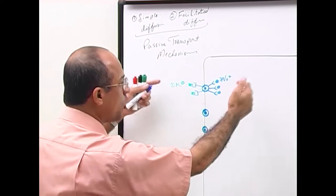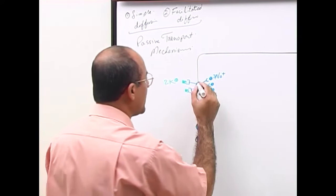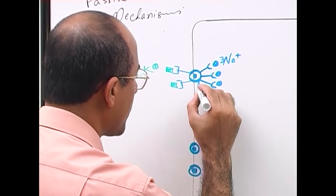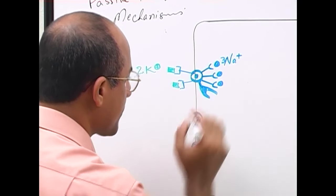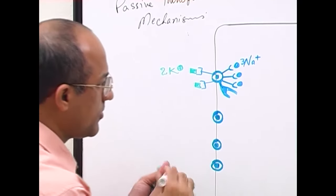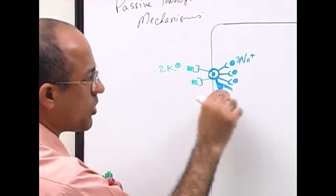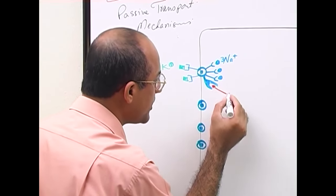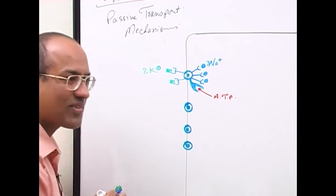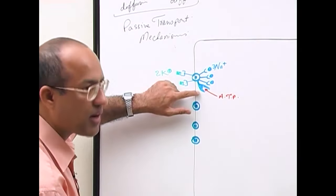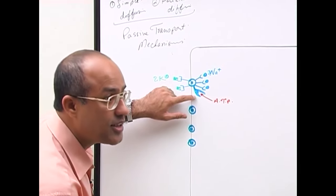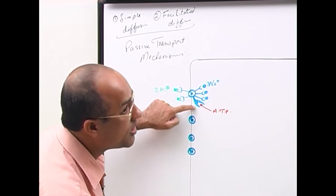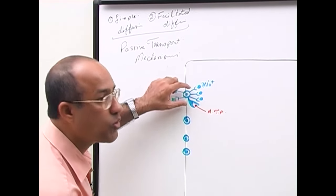When this molecule is loaded with sodium, it opens a special pocket. Once loaded on both sides, an ATP molecule fits into this special pocket. This domain of the molecule has the capability to break down ATP into ADP and phosphate, and the molecule becomes energized.